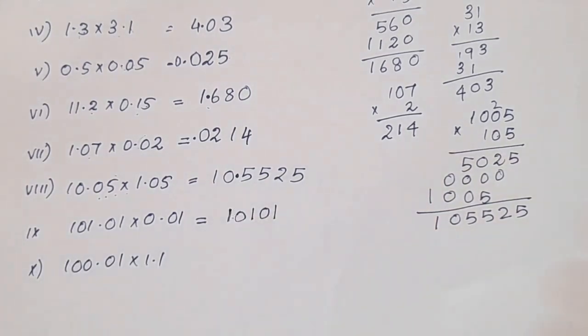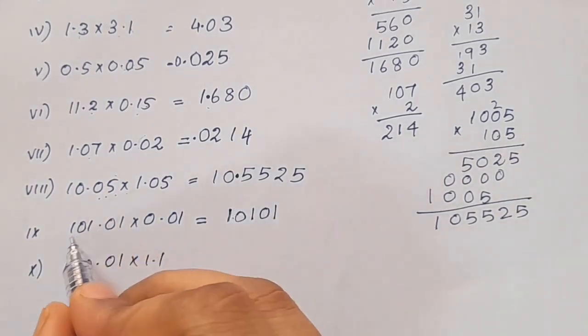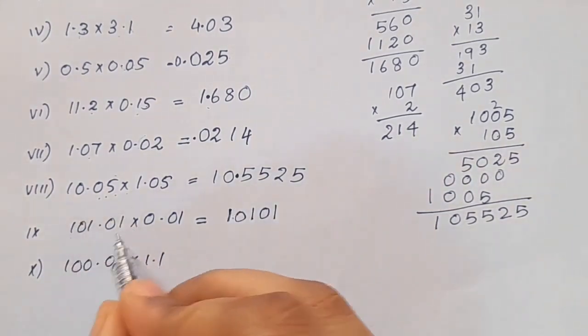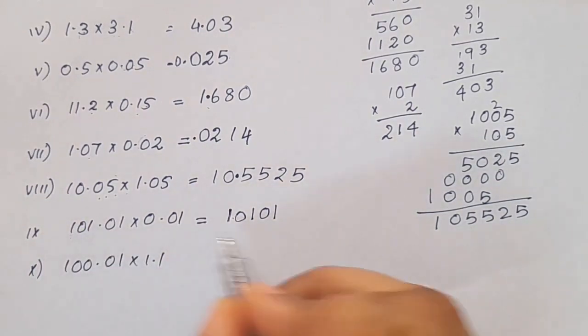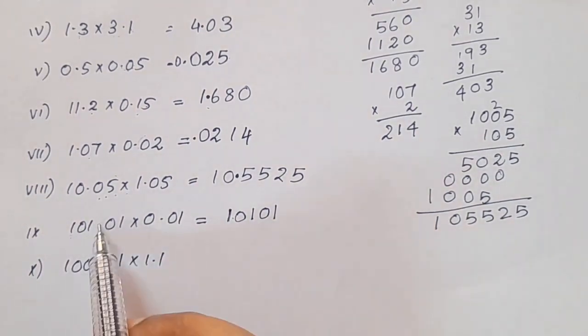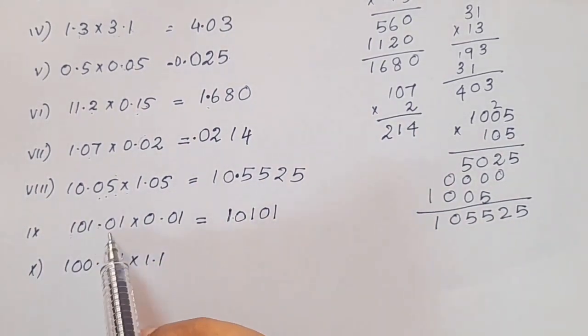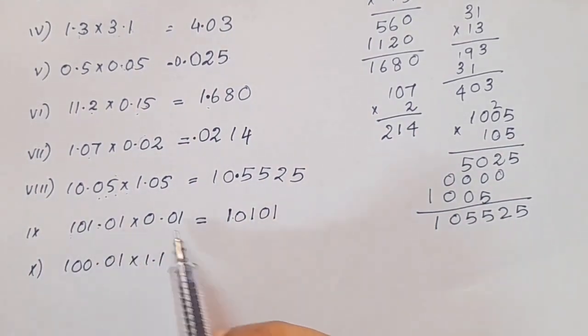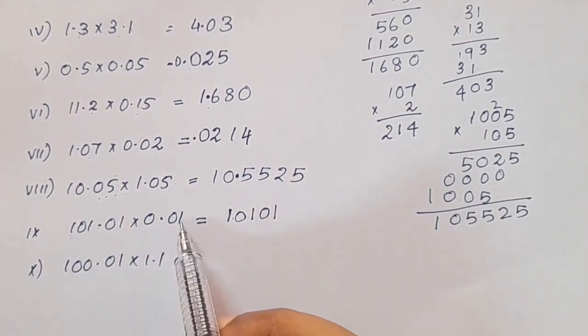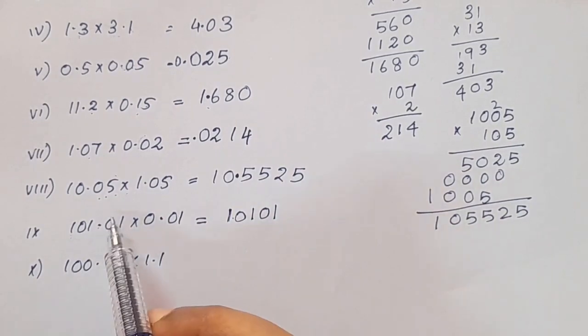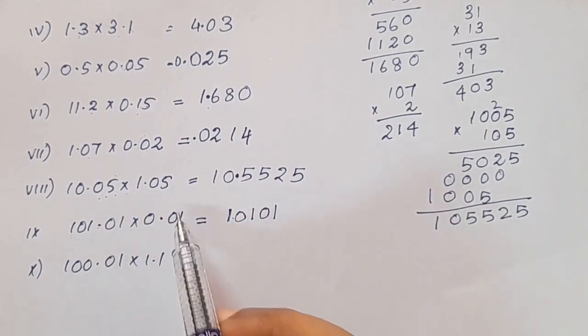Now we have to count the decimal point digits. 1.07 has 2 digits after the decimal, and 0.08 has 2 digits. Two plus two gives a total of four decimal digits.